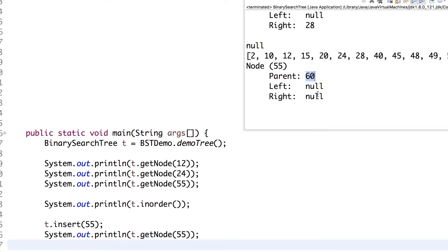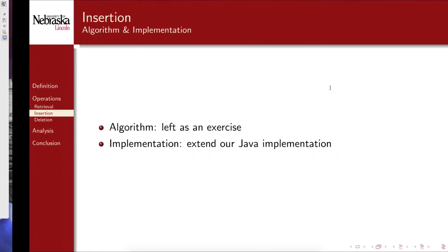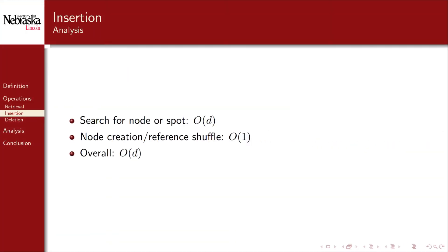This looks like it works but needs more testing. The analysis of insertion is similar to searching: the first phase searches for the correct spot, which is order D. Creating the new node and shuffling a few references is constant, order 1. Combined, the whole algorithm is order D.